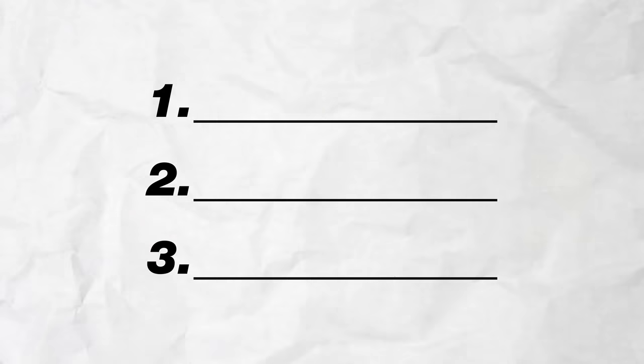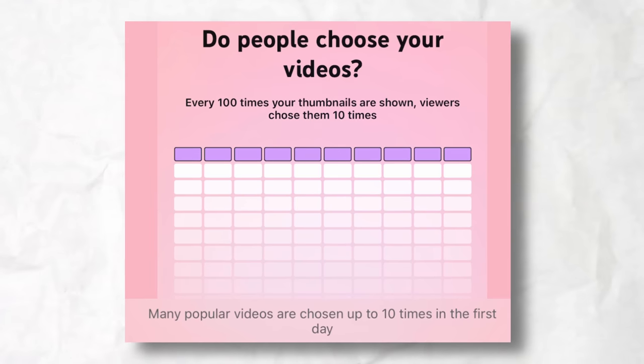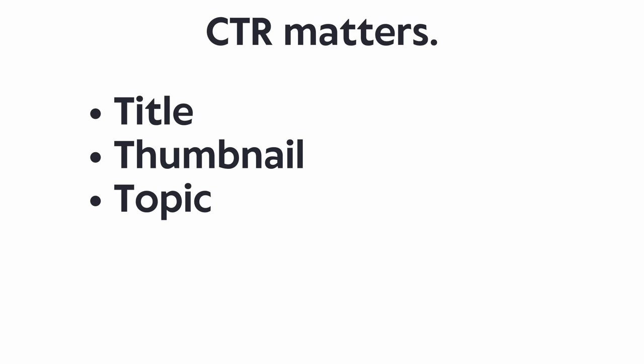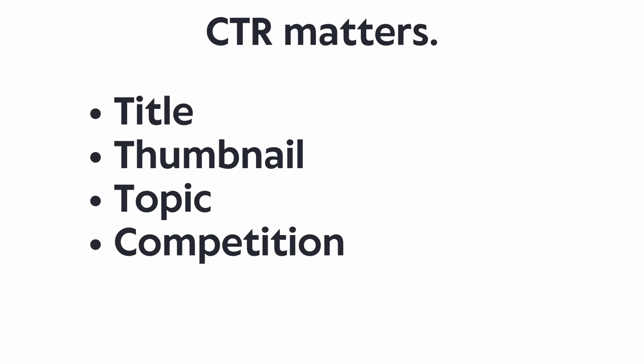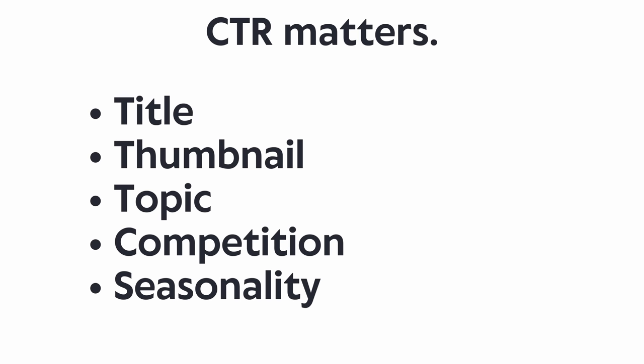Here are the three key takeaways you need to write down when thinking about the algorithm and what's going to get views on YouTube. First of all, click-through rate matters. You want 10% of people to click on your video, but there are a lot of different factors that are going to affect that number — some of those things are your title, your thumbnail, your topic, the competition with other videos surrounding that, and also the seasonality.